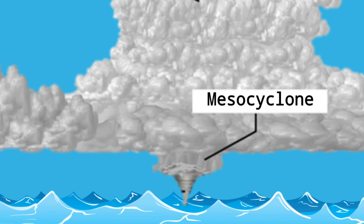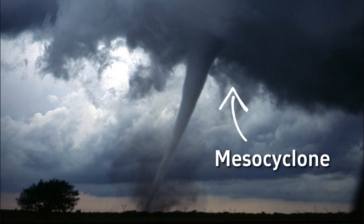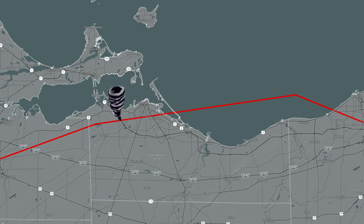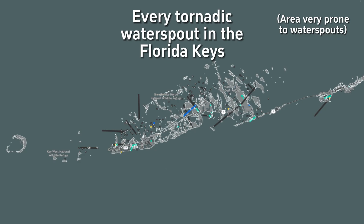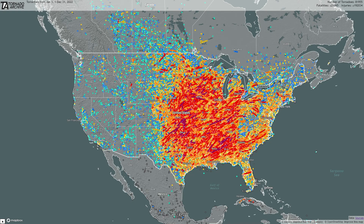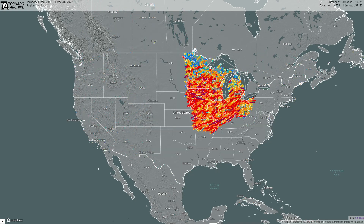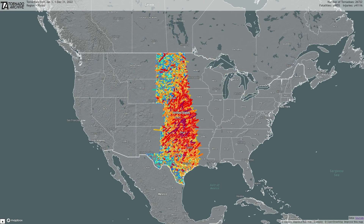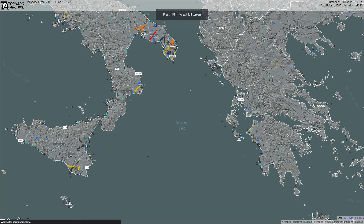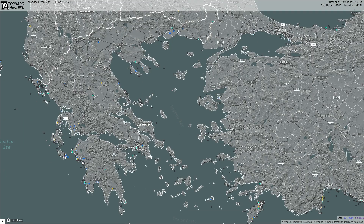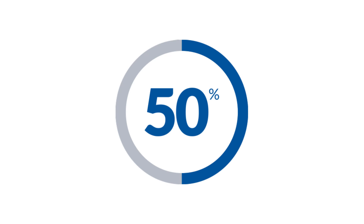Tornadic waterspouts are connected to a mesocyclone, just like tornadoes. If a tornado travels from land to water, it would be called a tornadic waterspout. Tornadic waterspouts are much rarer than their fair weather counterparts, since most areas that frequently get tornadoes are mostly landlocked. In the Adriatic, Ionian, and Aegean seas, tornadic waterspouts can make up about half of the total number of tornadoes.